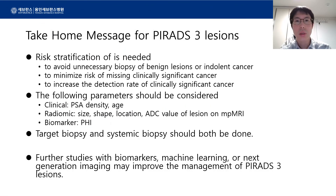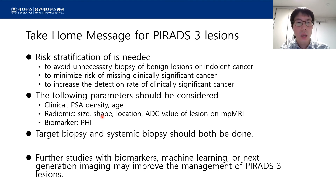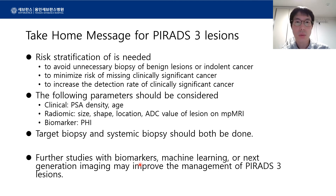In conclusion, when managing PI-RADS 3 lesions, risk stratification is needed to avoid unnecessary biopsy of benign lesions while minimizing the risk of missing significant cancer and increasing the detection rate. Clinical parameters such as PSA density and age, characteristics of lesions such as size, shape, location, and ADC value, and biomarkers such as PHI can be used for this purpose. When the decision to biopsy is made, targeted biopsy and systematic biopsy should be done together. However, the studies reviewed are all retrospective with relatively small numbers, so concrete guidance is not yet possible. Further studies with biomarkers, machine learning, or next-generation imaging may provide more information to manage PI-RADS 3 lesions.